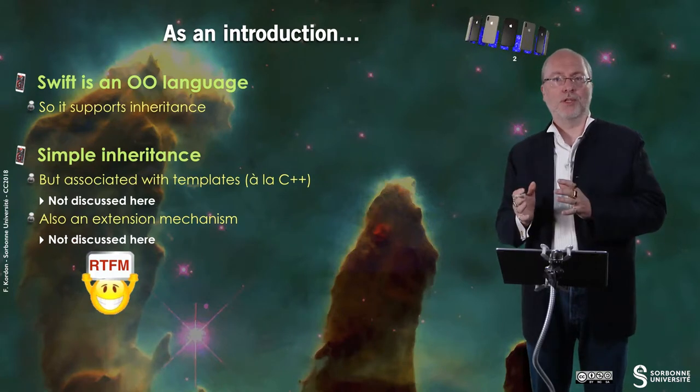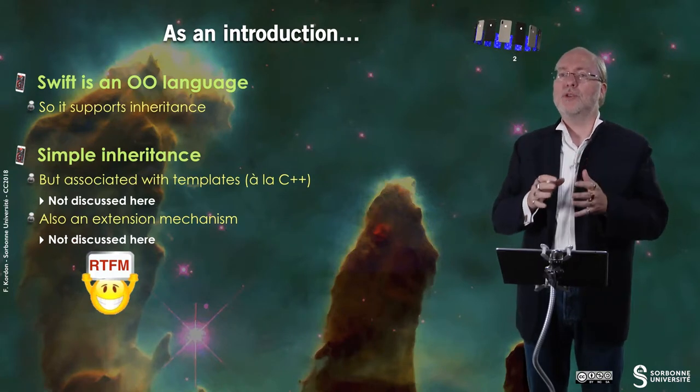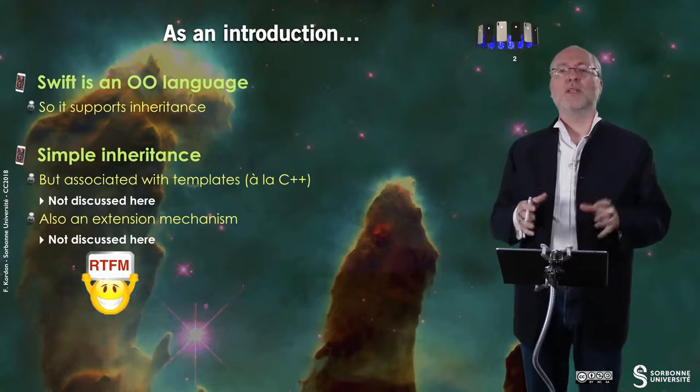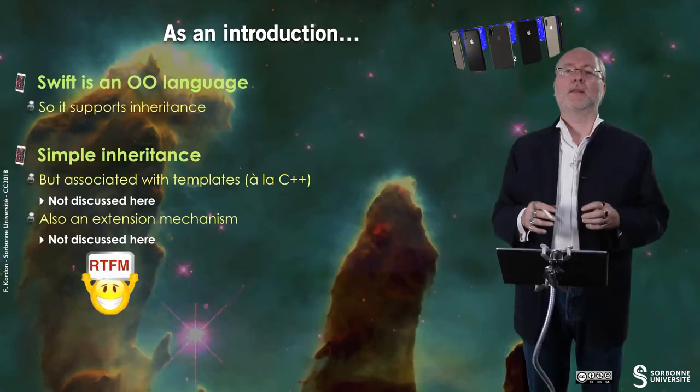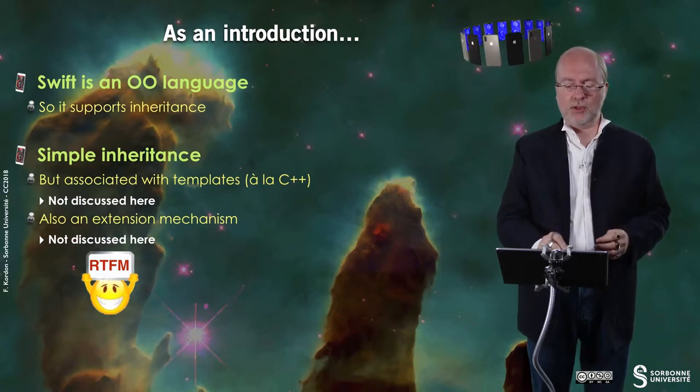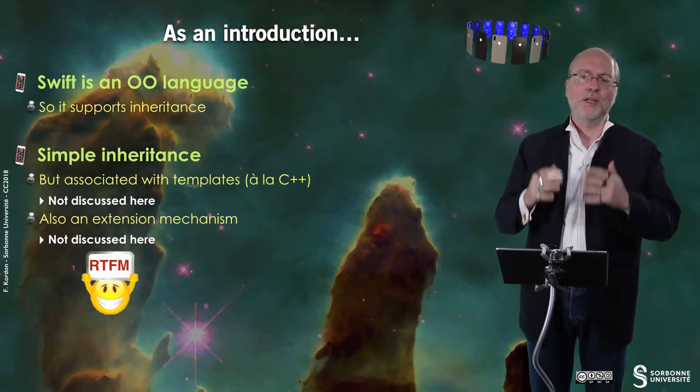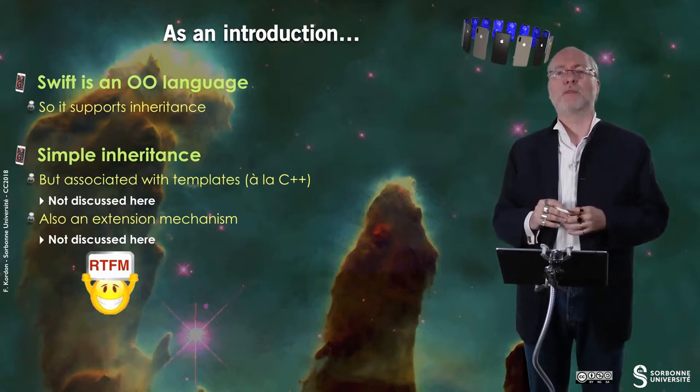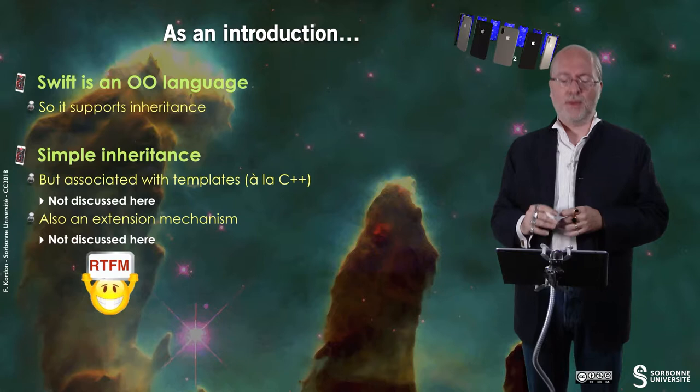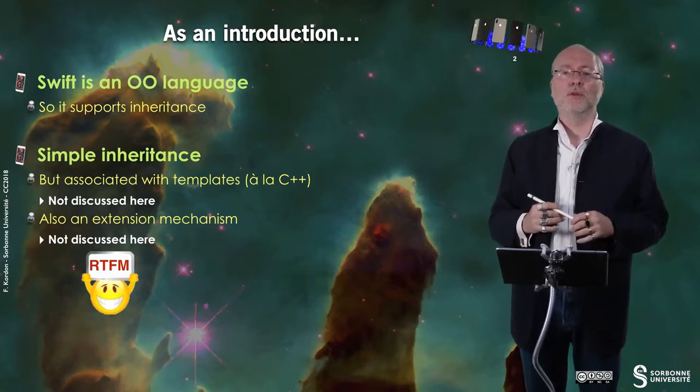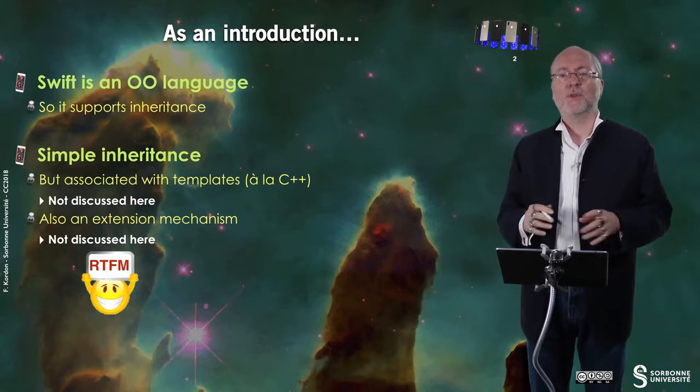Swift is an object-oriented language, so it must support inheritance. It supports basically simple inheritance as many languages, Java for example, and it's also associated with a template-based mechanism that will not be discussed in this course because we won't really need it for iOS programming. And there is also an extension mechanism that I already mentioned in a previous video. We will not discuss it.